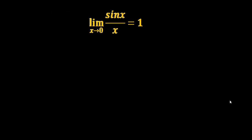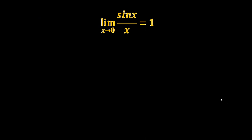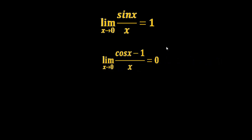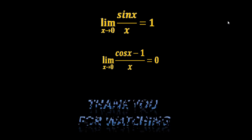So these two are very important results in limit: limit X tends to 0 of sin(X)/X equals 1, and limit X tends to 0 of (cos(X) − 1)/X equals 0. That's all in this video, thanks a lot for watching.